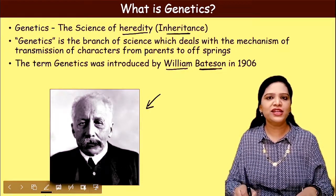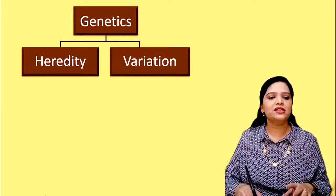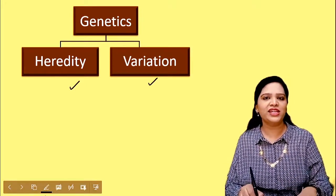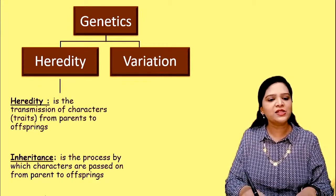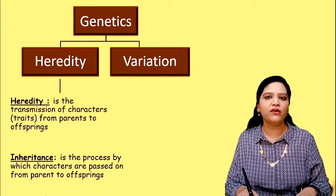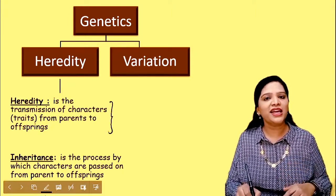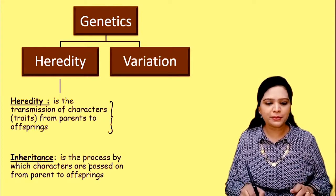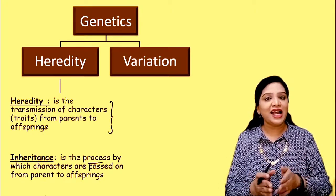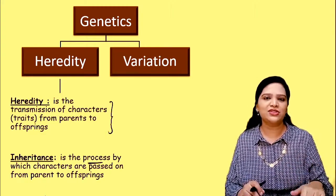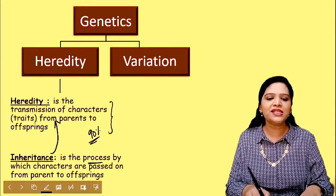Genetics deals with two important things: heredity and variation. Heredity is the transmission of characters from parents to their offspring. Inheritance is the process by which the characters are passed from parents to offspring. Heredity and inheritance essentially mean the same thing; inheritance is the basis for heredity.